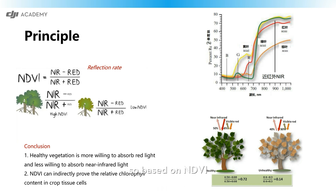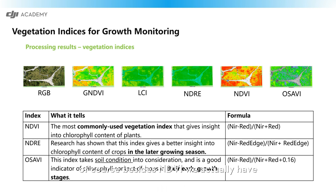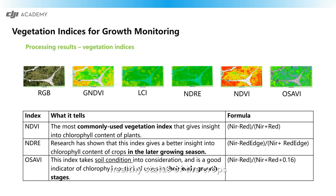Based on NDVI, it can indirectly indicate the relative chlorophyll content in crop tissue cells. Besides NDVI, we actually have other vegetation indices to reflect the health status of crops.